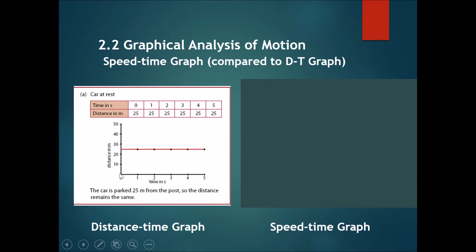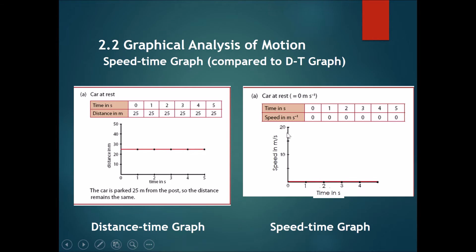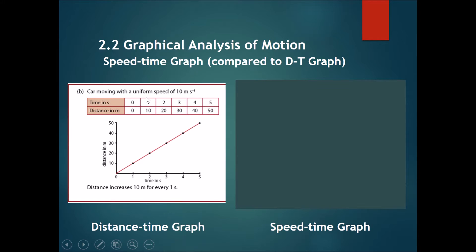If the car was at rest, on a distance-time graph you would draw a straight horizontal line. If the car was at rest on a speed-time graph, the speed would remain at zero regardless of the position of the car. You would always draw a horizontal straight line, and it would always be at zero speed.